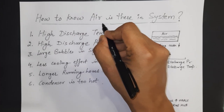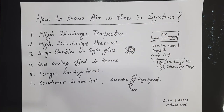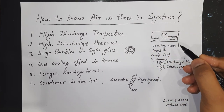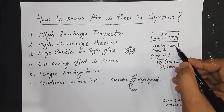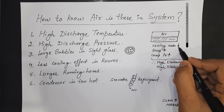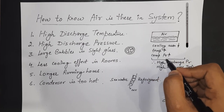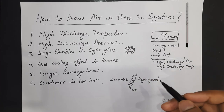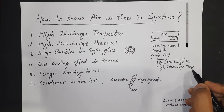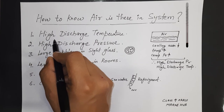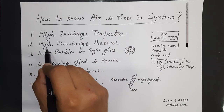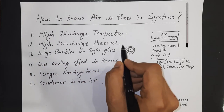How do we know that air is present in the system? First of all, suppose air is present in the system. What will happen is the cooling area will be reduced by the refrigerant. Hence, the cooling area is reduced, so the temperature will increase. Also, the compression pressure will also increase. That's why it will result in high discharge pressure and high discharge temperature. So, the first point: high discharge temperature and high discharge pressure are observed.